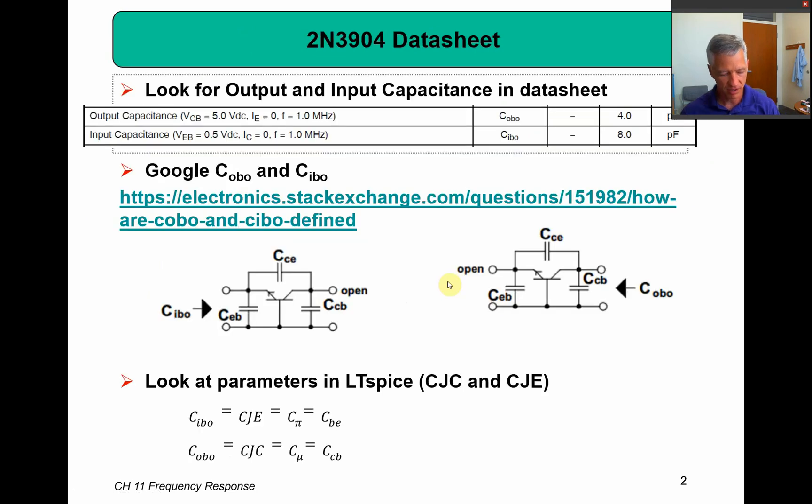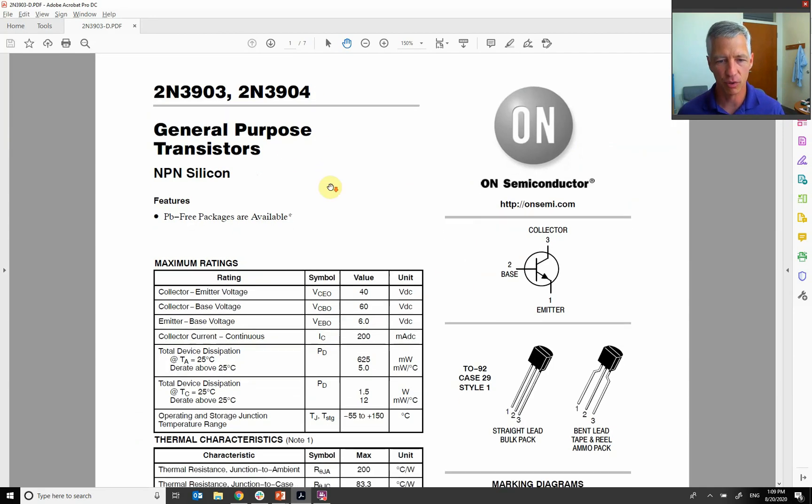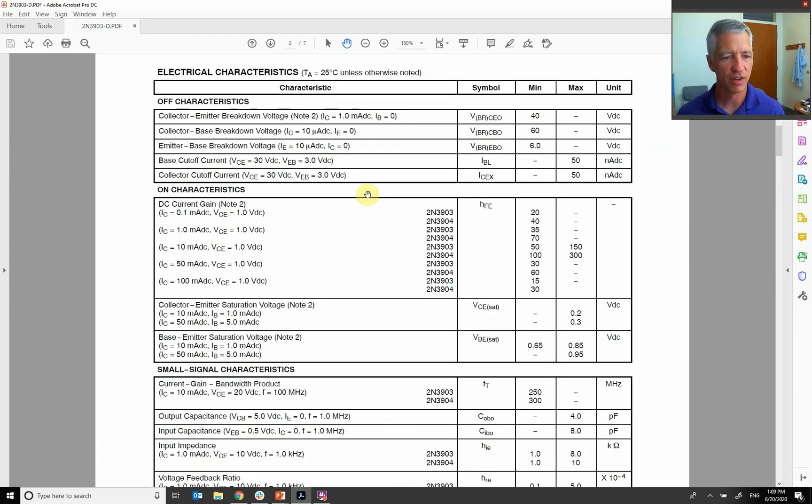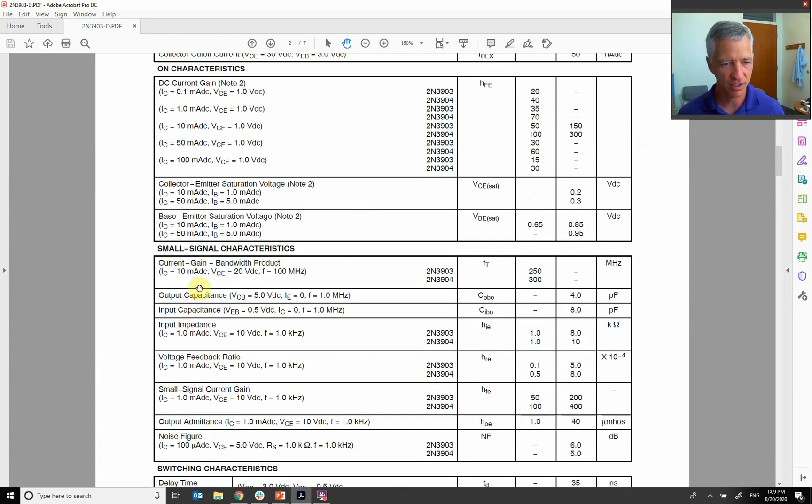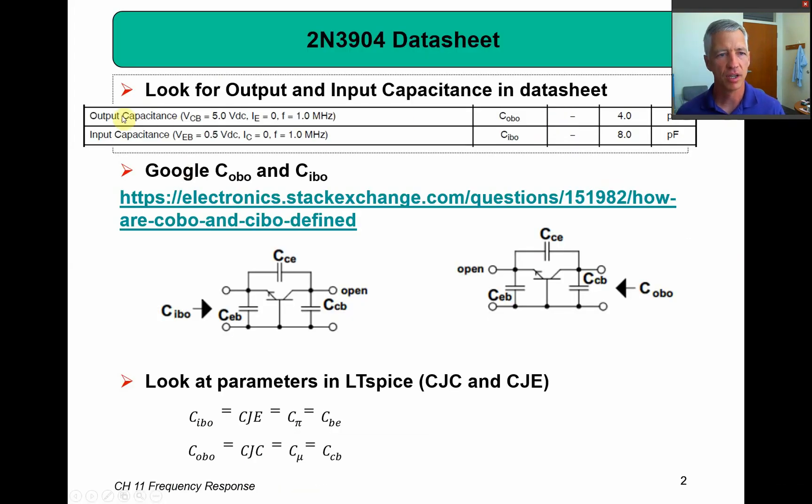So now let's go look at our data sheet. Here is the 2N3904. We're trying to figure out what these built-in capacitors are. If I come down here and look, here is an output capacitance and here is an input capacitance. And these are called C_OBO and C_IBO.